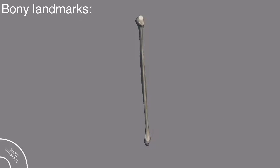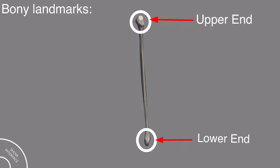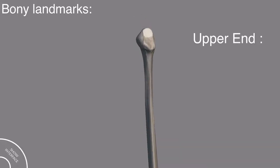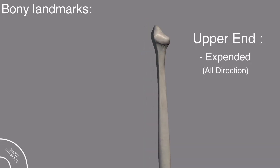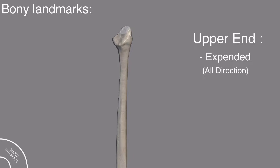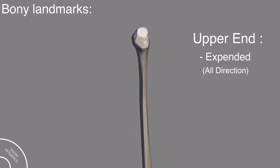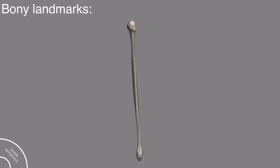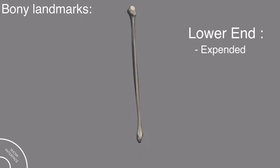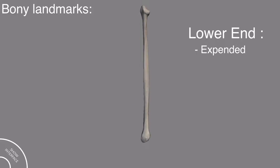The fibula bone has an upper end, a lower end, and a shaft in the middle. The upper end is expanded in all directions — this is the main important point to differentiate the upper end from the lower end. The lower end is expanded only in the anterior-posterior position.